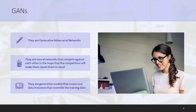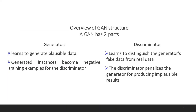GANs stand for Generative Adversarial Networks. They are neural networks that compete against each other, where the competition pushes them to excel. They are generative models that create new data instances that resemble the training data. A GAN usually has two parts: one is called a generator and another is a discriminator. The generator learns to generate plausible data, and its generated outputs become negative training examples for the discriminator. The discriminator learns to distinguish the generator's fake data from real data, and penalizes the generator for producing implausible results.